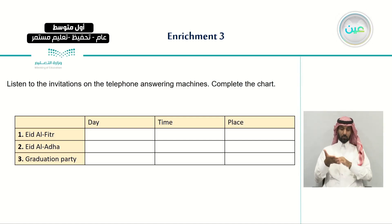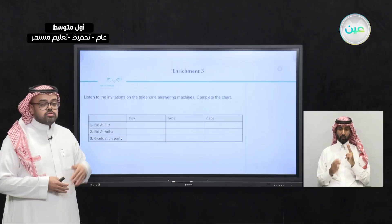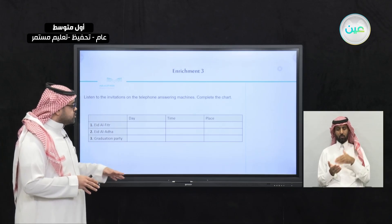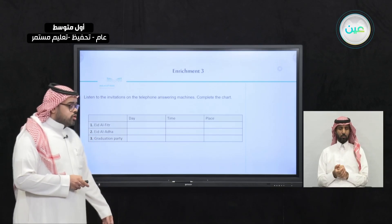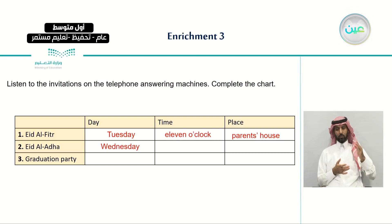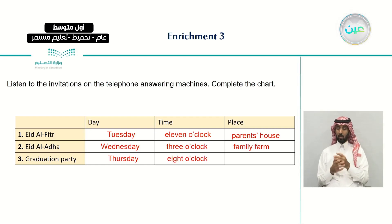Next, we listened to invitations on telephone answering machines. We had a chart with different holidays: Eid al-Fitr, Eid al-Adha, and a graduation party, divided into three parts — day, time, and place. We filled in the answers: for Eid al-Fitr — Tuesday, 11 o'clock, parents' house; Eid al-Adha — Wednesday, 3 o'clock, family farm; graduation party — Thursday, 8 o'clock, the Lebanese restaurant.